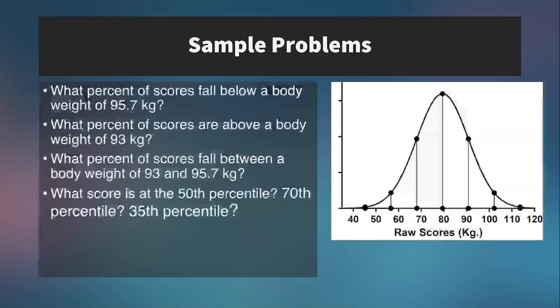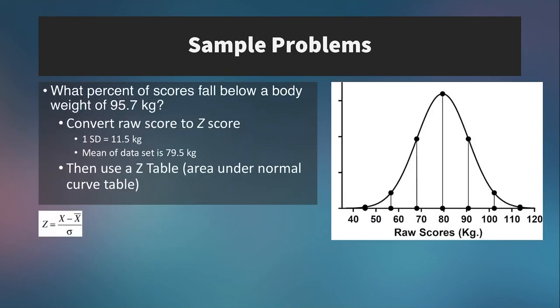Let's work through some sample problems to get the hang of converting to z-scores, then to percentages, and then back to raw scores. Here are the questions we are going to address: What percent of scores fall below a certain body weight? What percent of scores are above a certain body weight? What percent of scores are between two body weights? And what are the scores at various percentiles?